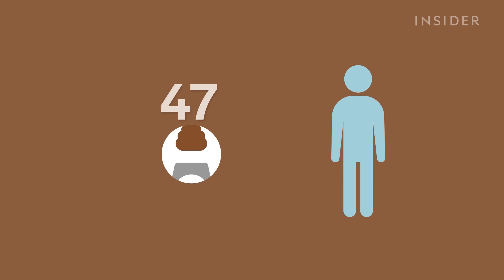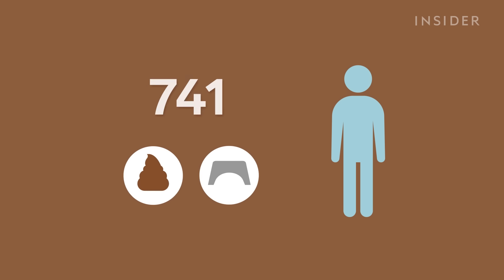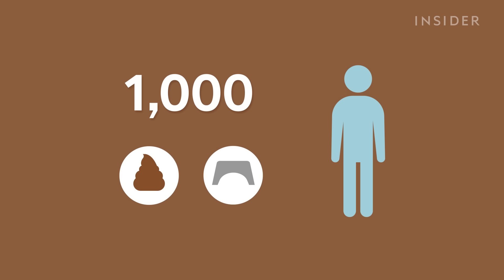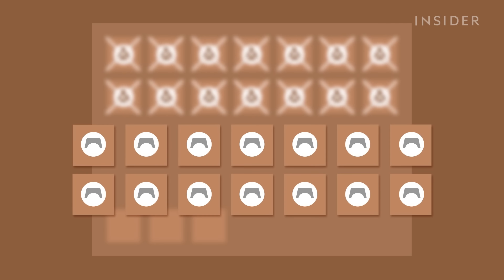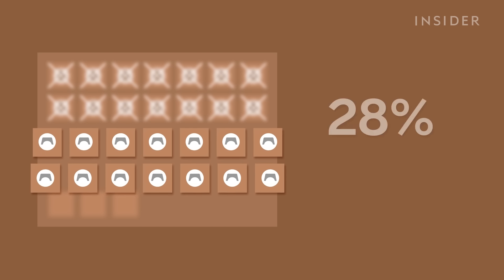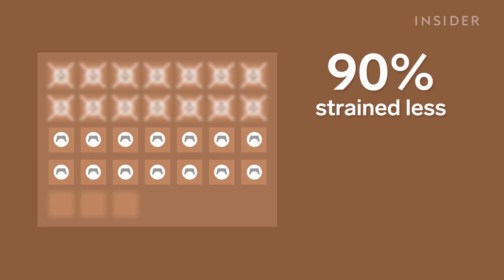One study followed over 50 healthy poopers through 1,000 collective bowel movements using the Squatty Potty. The experiment started with a two-week control period of unassisted pooping. Then participants spent another two weeks using the Squatty Potty. 90% of the participants strained less, and over 70% spent less time on the toilet.